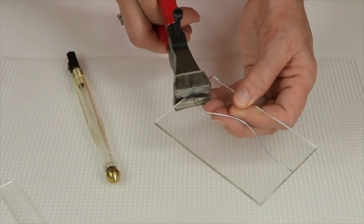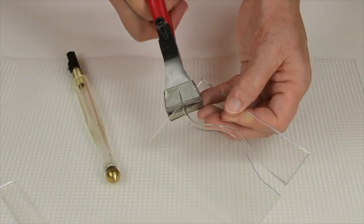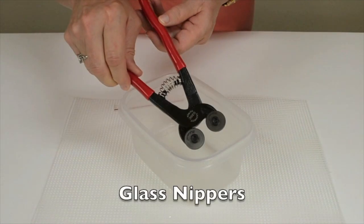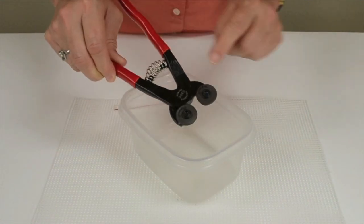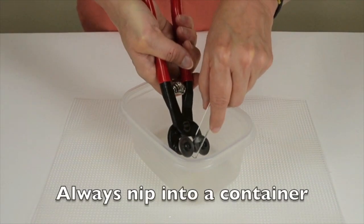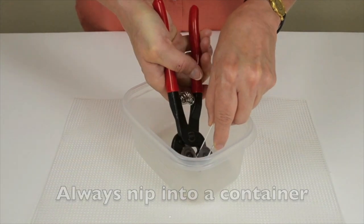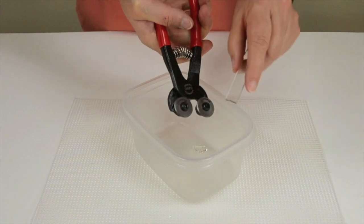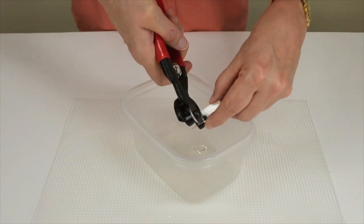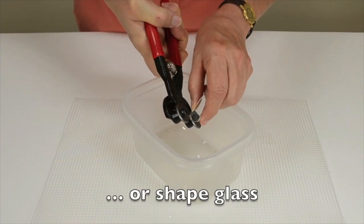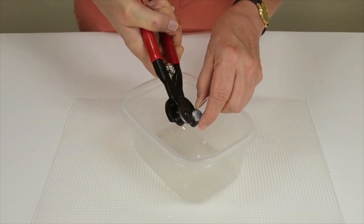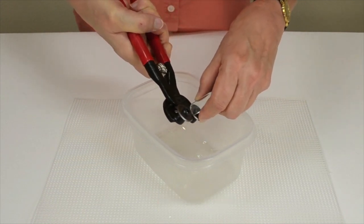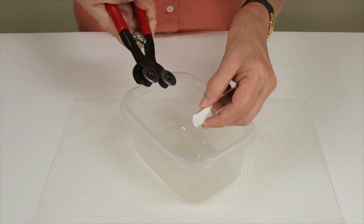These are glass nippers, a great little tool. They've got round wheels that when you squeeze them together break or nip off pieces of glass. You always want to use them with a container, nip downward in there so the glass doesn't fly around. You can nip small pieces like we're doing here, or you can use the tool to shape a piece of glass by nibbling off little bits at a time.